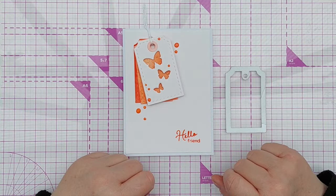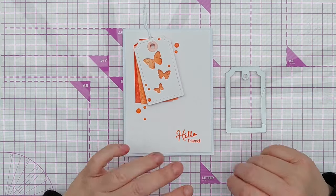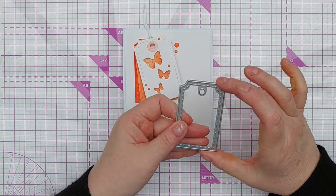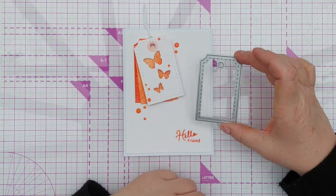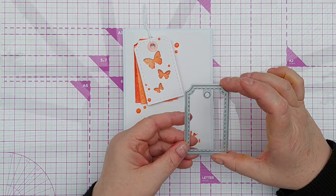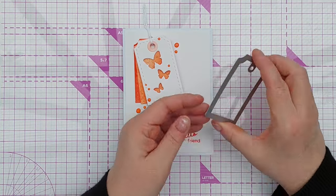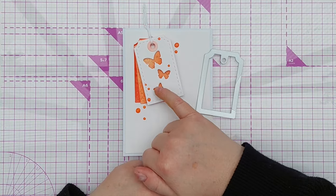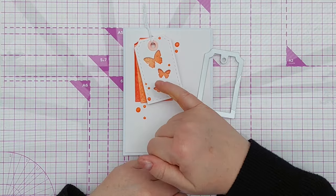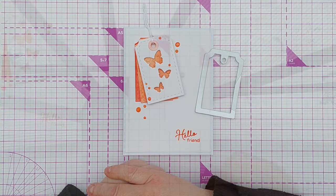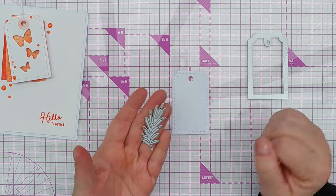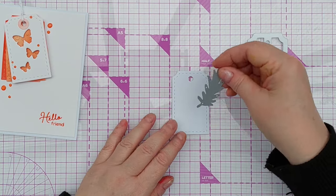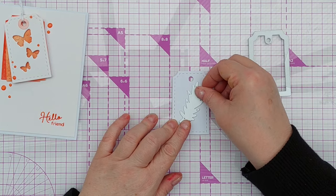The theme of this video is die cutting from die cuts. This is the tag die that we've been using throughout the series as a tag, but for this card I used some little butterfly dies to cut apertures in the tag. For this one I'm going to use this leafy frond die and cut an aperture that you can look through and see some color behind.